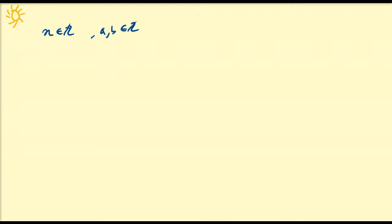Hello there, and in this video we're going to continue our discussion of congruences. So remember, for some natural number or integer n, and integers a and b, we say that a is congruent to b modulo n if n divides b minus a. That is, if you subtract b and a, and n divides into that difference with zero remainder, then we say that a is congruent to b modulo n.